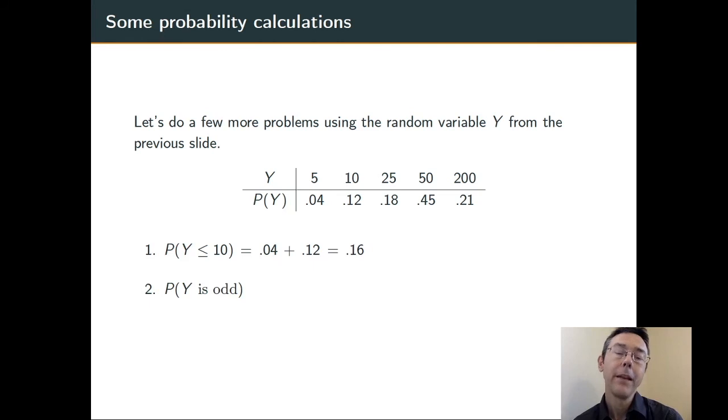Secondly, probability that Y is odd. So there's exactly two outcomes in the event that Y is odd, Y equals 5 and Y equals 25. Again, we get those two probabilities, add them up, and we get 0.22.